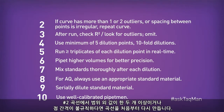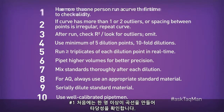Number 2: if the curve has more than one or two outliers, or if the spacing between any of your points is irregular, repeat the entire curve, including doing the dilution. And number 1: have more than one person run a curve the first time to make sure that the results are in agreement.